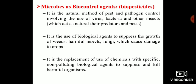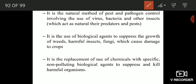The second definition: biopesticides are the use of biological agents to suppress the growth of weeds, harmful insects, and fungi which cause damage to our crops. Another definition: biopesticides are the replacement of chemical pesticides — which are polluting and not target-specific — with specific, non-toxic biological agents to suppress and kill harmful organisms in our crop fields.